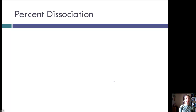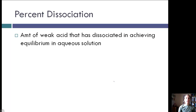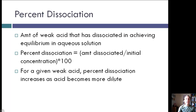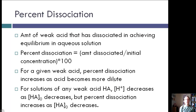Let's look at the last concept of this section: percent dissociation. This is the amount of weak acid that has dissociated in achieving equilibrium. It equals the amount dissociated divided by the initial concentration times 100. For a given weak acid, the percent dissociation increases as the acid becomes more dilute. In general, for solutions of any weak acid HA, the H⁺ concentration decreases as the initial concentration decreases, but percent dissociation increases — almost an inverse relationship.